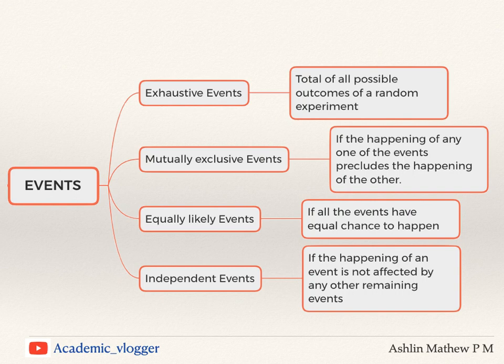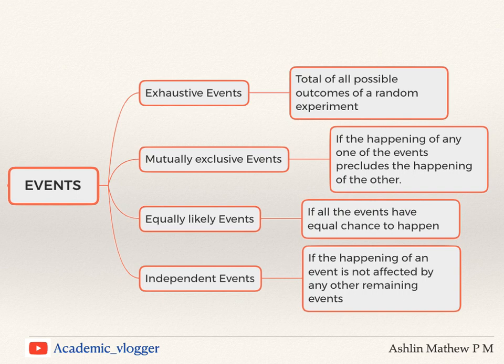The next type is mutually exclusive events. If the happening of one event prevents the happening of any other event, then such events are said to be mutually exclusive. For example, in throwing a die, all six faces numbered 1, 2, 3, 4, 5, and 6 are mutually exclusive, since if any one face appears, the possibility of others showing up in that same trial is eliminated.